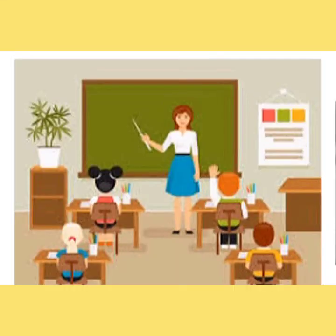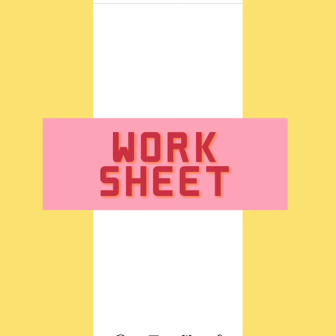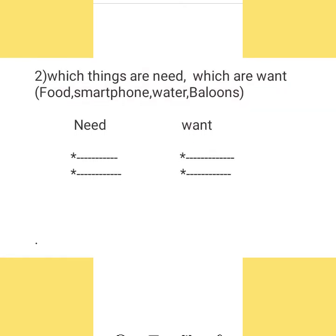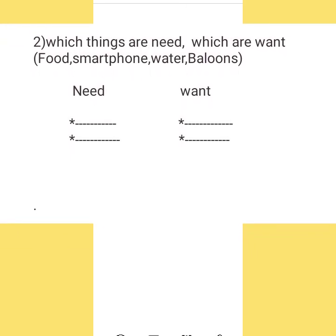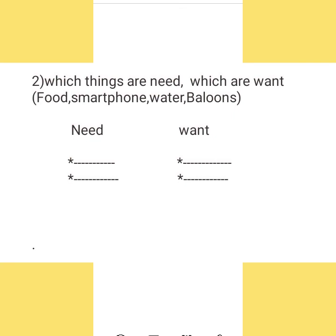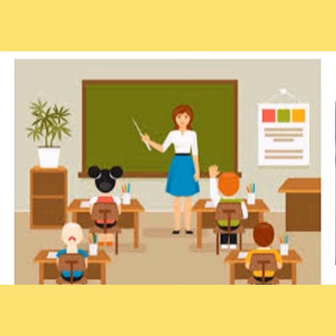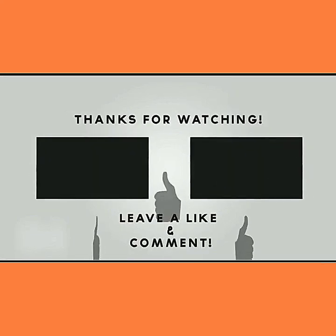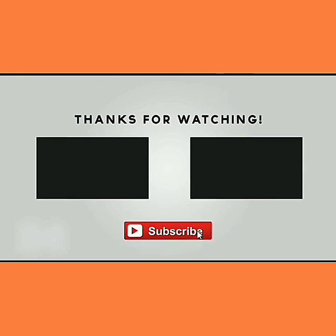I hope now you all understand the value of money. Now I will ask you some questions — answer them and write on paper. First question: if I give you 500 rupees, which things will you buy? Second question: write which things are needs and which are wants — food, smartphone, water, balloons. Okay children, we will meet in the next session. Thank you.